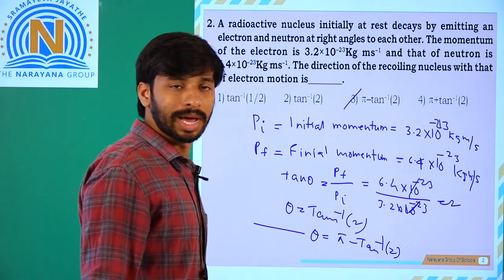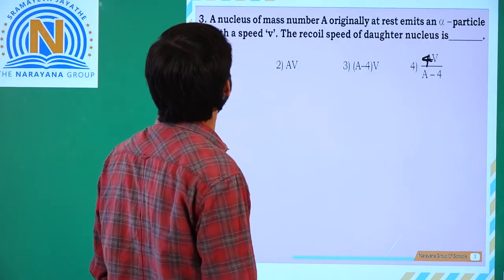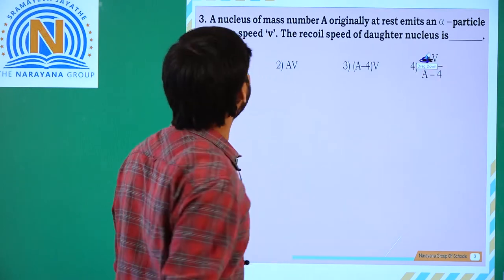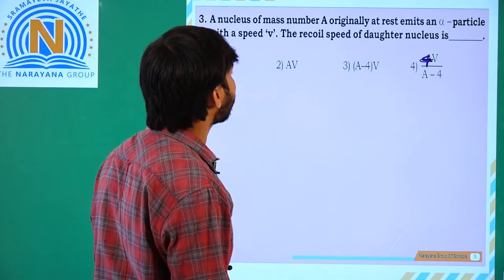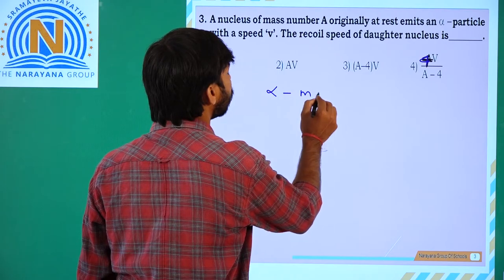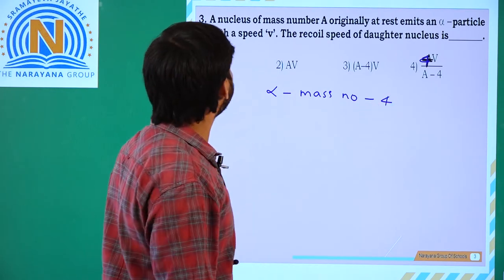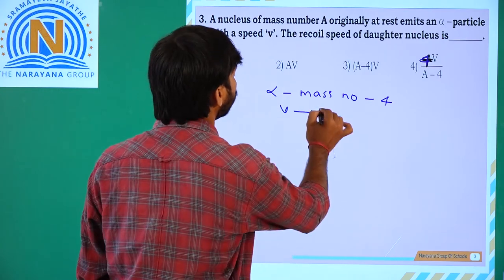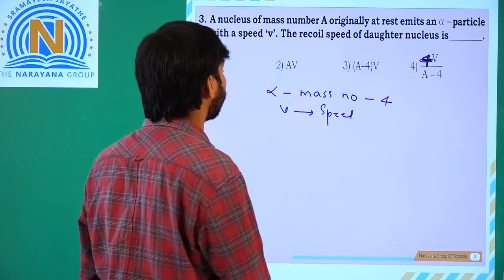The third option is the correct answer. Next question. The nucleus of mass number A emits an alpha particle with mass number 4 and speed V. We need to find the recoil velocity of the daughter nucleus.